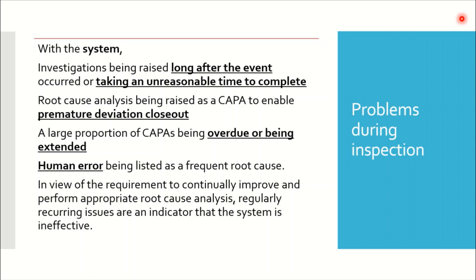Secondly, there is unreasonable time taken to complete investigations. Whenever an investigation is logged, it takes longer durations to complete as well. People are not aligned and management is not focused on closure of the investigation — it keeps getting time extensions. Next, root cause analysis is being raised as a CAPA to enable premature deviation closure. Also, a large portion of CAPAs are overdue or being extended, which is a critical issue. Additionally, human error is frequently being listed as a root cause.